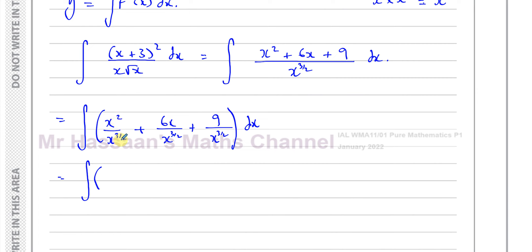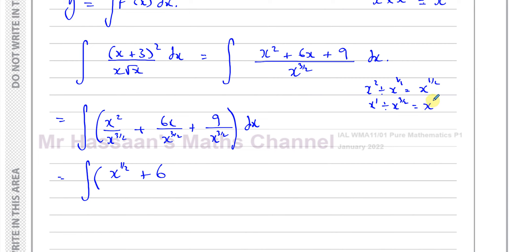x squared divided by x to the power of 3 over 2: I subtract the powers, so 2 minus 3 over 2 is a half — that gives x to the power of a half. Plus 6 times x divided by x to the power of 3 over 2: x is x to the power of 1, so 1 minus 3 over 2 is negative a half — giving 6x to the power of negative a half. Plus 9 over x to the power of 3 over 2, which becomes 9x to the power of negative 3 over 2. A negative power means reciprocal, so all x terms are now in the numerator and it's ready to be integrated.